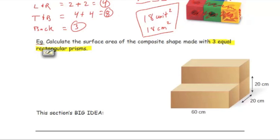Let's try the second example where we're calculating the surface area of the composite shape made with three equal rectangular prisms. First thing I'll do is just kind of look at the shape and just think to myself, well, each end is a square. So it's twenty by twenty. So think of using these dimensions that are given. The area of one of those squares is going to be twenty times twenty. So I'm just going to write that down, or twenty squared, and that's going to be four hundred.